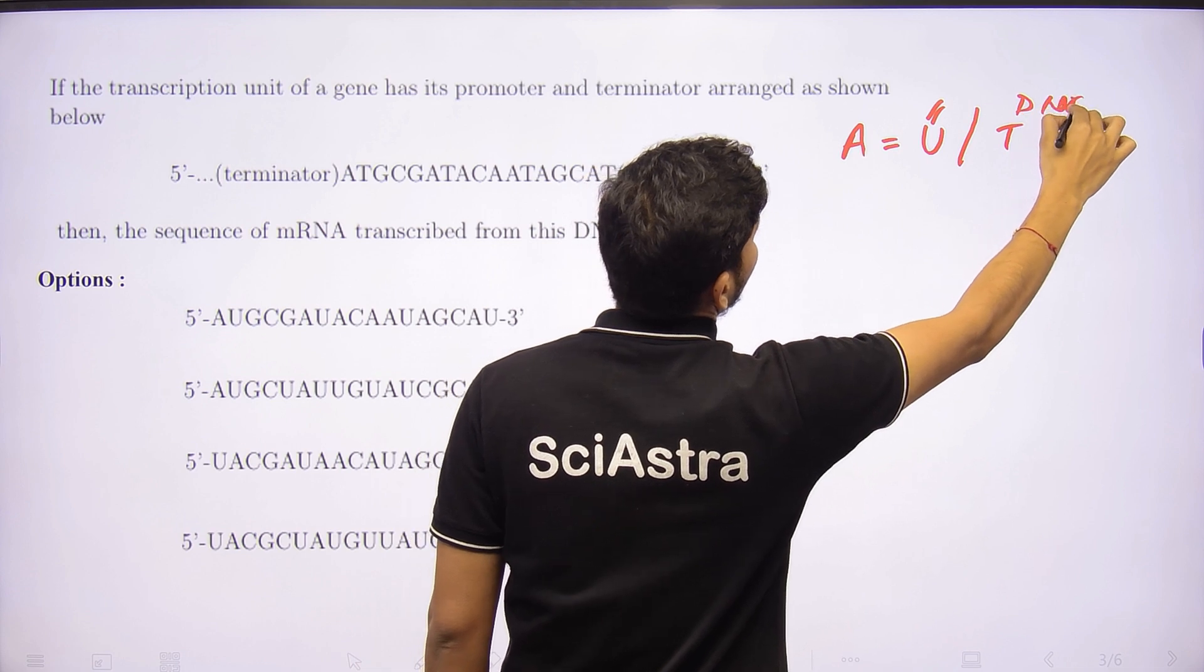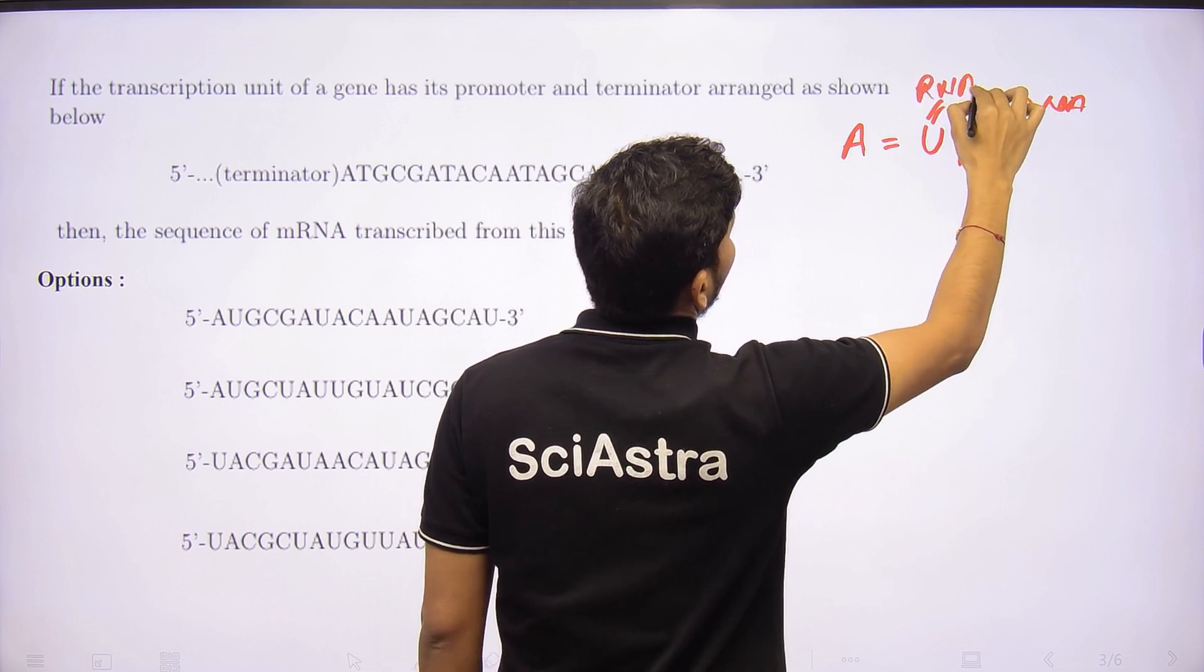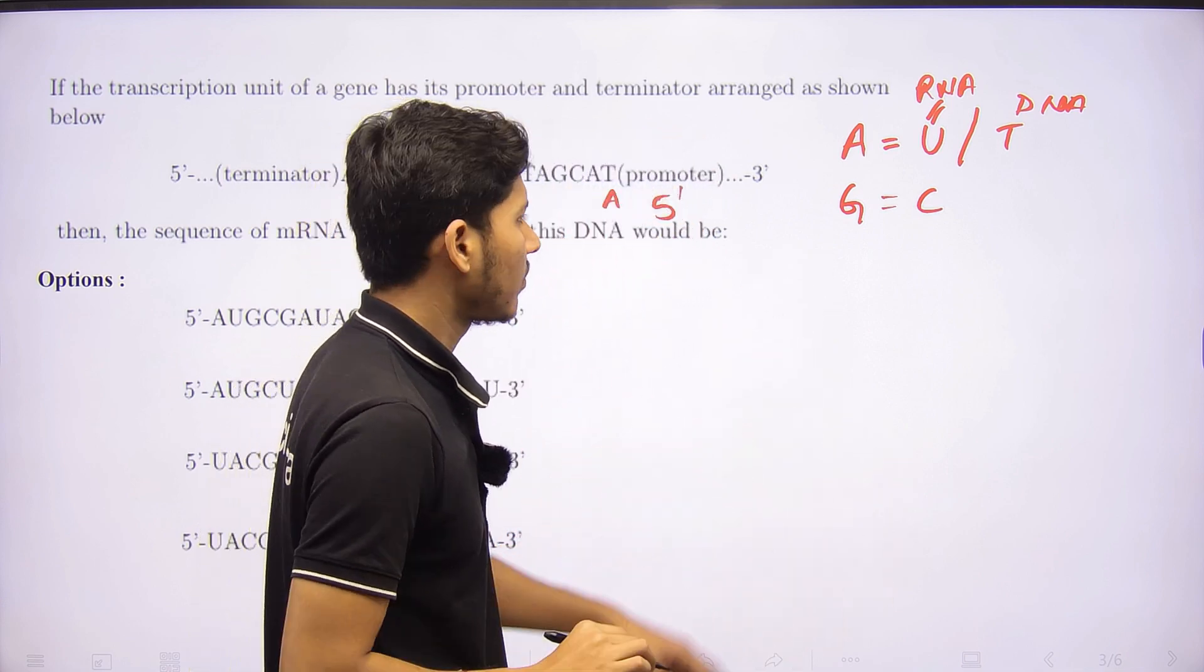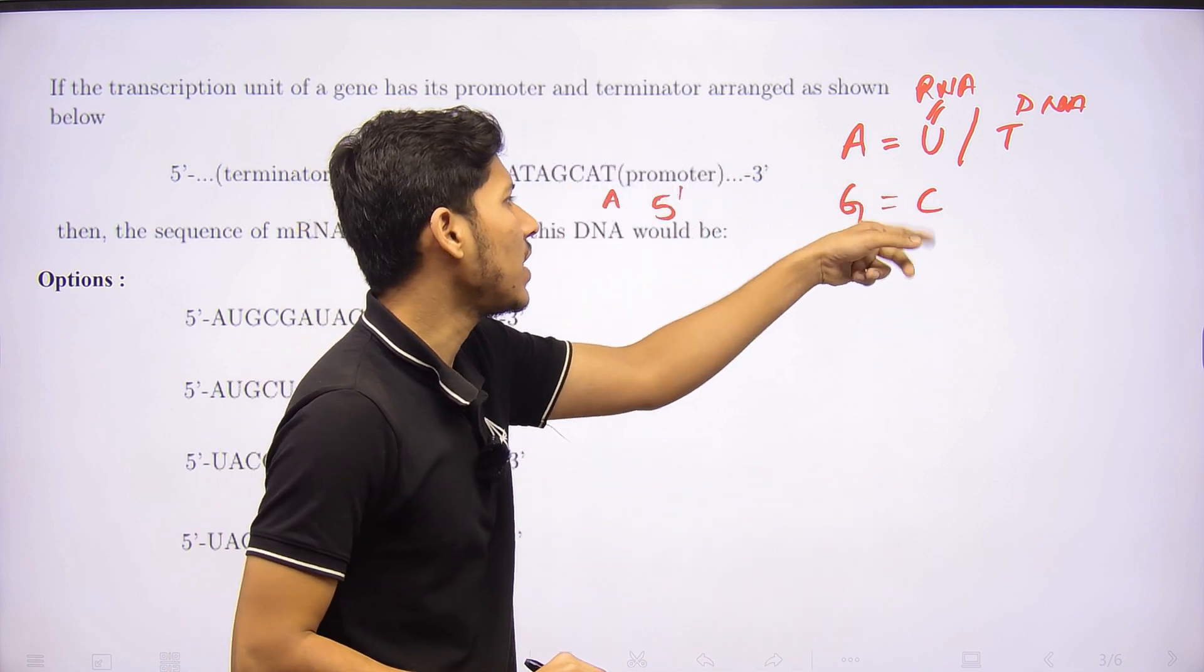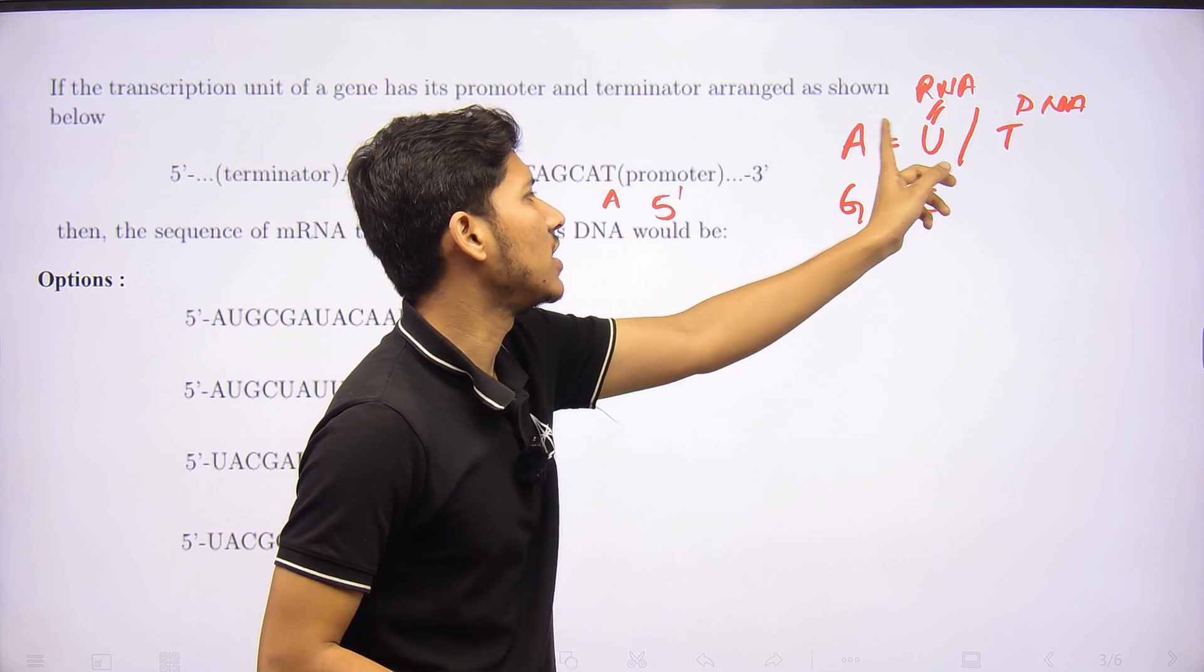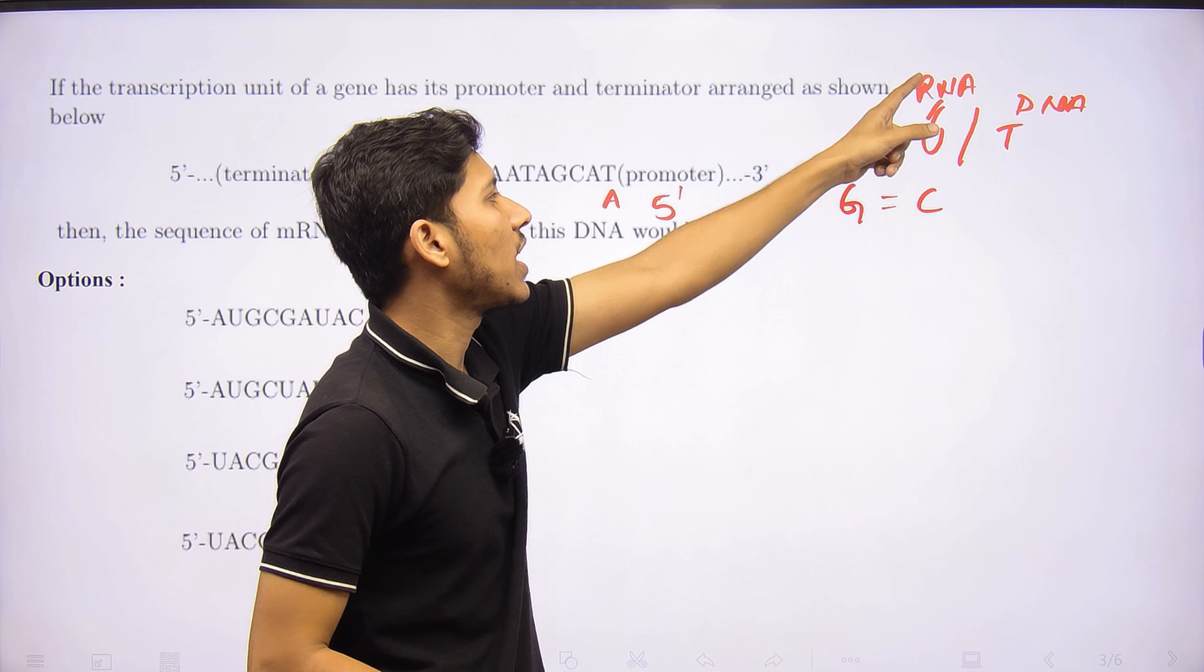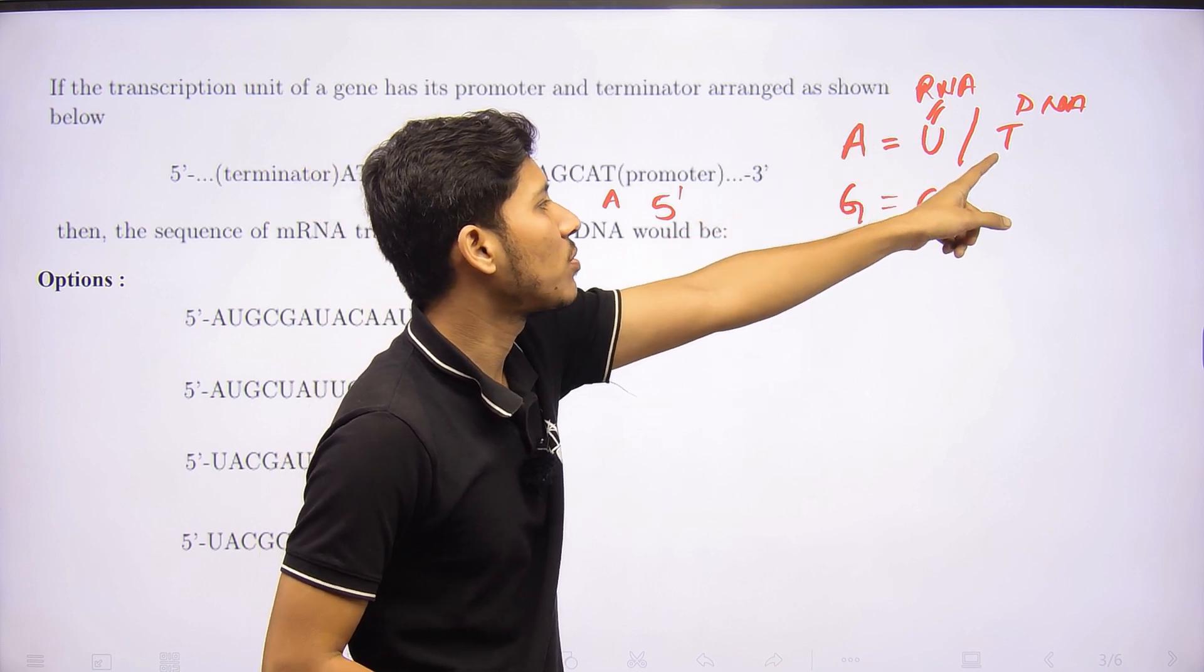A makes a bond with U in RNA and A makes a hydrogen bond with T in DNA. So let's see the answer here.